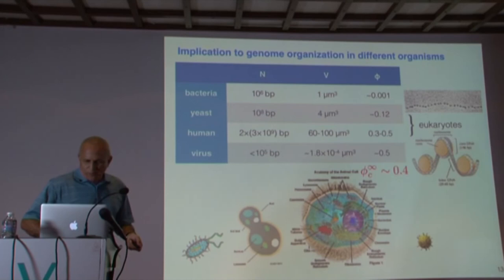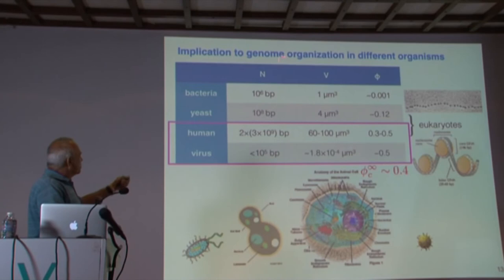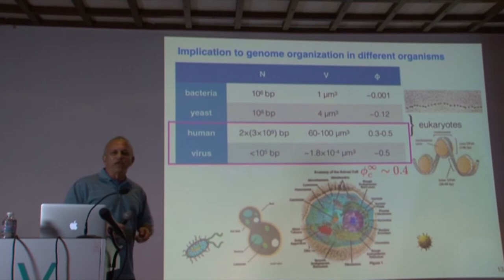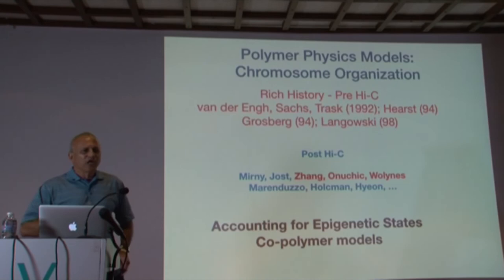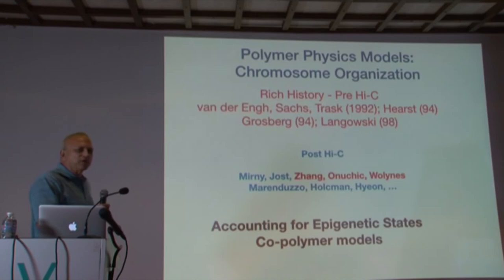Because we know these numbers, we can figure out what the volume fraction phi should be for various organisms — from bacteria to viruses. For humans, the volume fraction ranges from about 0.3 to 0.5, which means some chromosomes may relax quite rapidly whereas others may not. We predict that for viruses, the genome relaxation time would be essentially infinite. That's the heuristic argument that led us to conclude that the dynamics of interphase chromosomes ought to be sluggish.